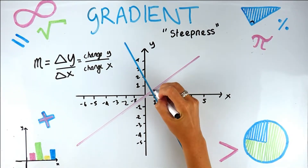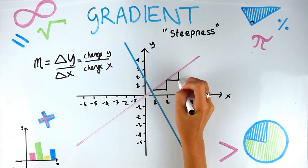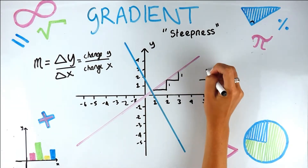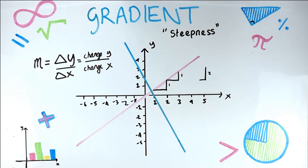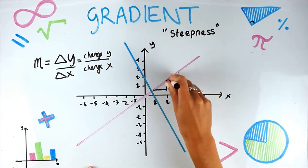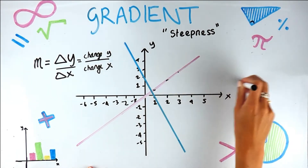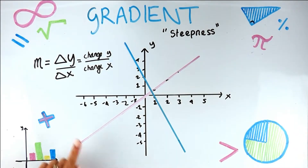Some of you may have used a method where you go along one, up one, along one, up one. If you go along one and up two then the gradient is two. That approach doesn't always work if the line is harder, but it's a quick method. It's very important to know the formula: delta y over delta x — change in y over change in x.